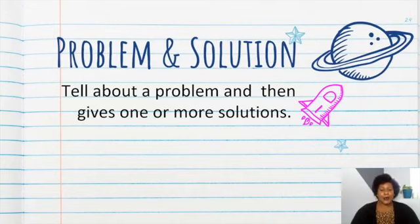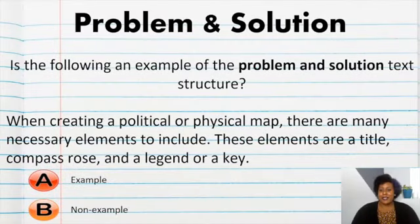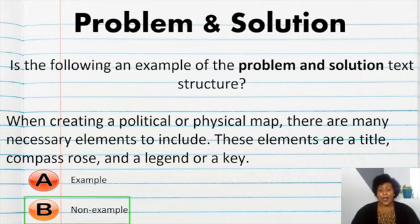So far, you guys are doing a great job. This one, problem and solution, is what non-fiction text typically is. It tells a problem and it gives one or more of the solutions. These are the key words or signal words that let you know that it is a problem in solution text structure. Now, let's practice. Is this an example of the problem in solution text structure? When creating a political or physical map, there are many necessary elements to include. These elements are a title, compass rose, and a legend or a key. A or B, is this an example or a non-example? If you chose a non-example, you are right on the money.